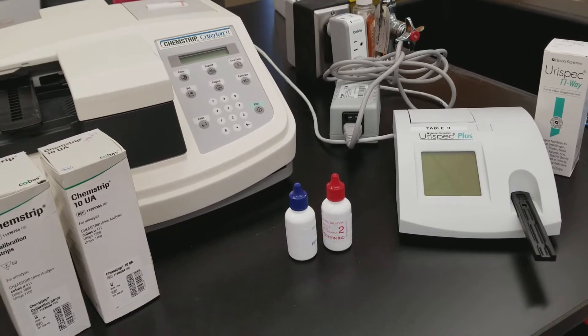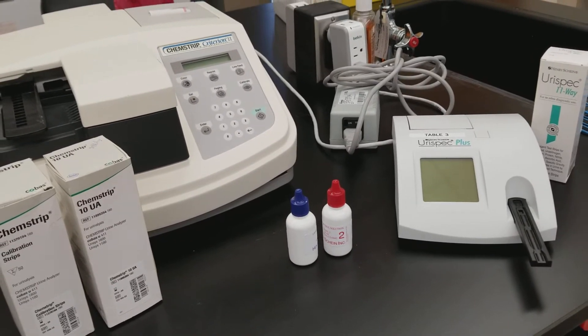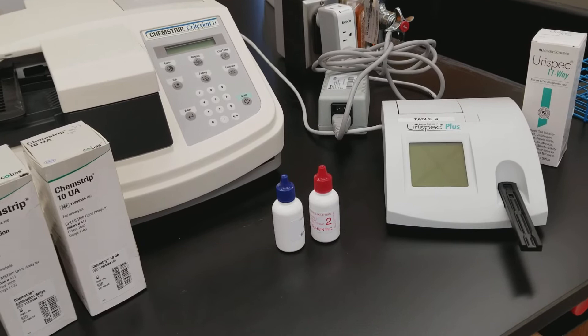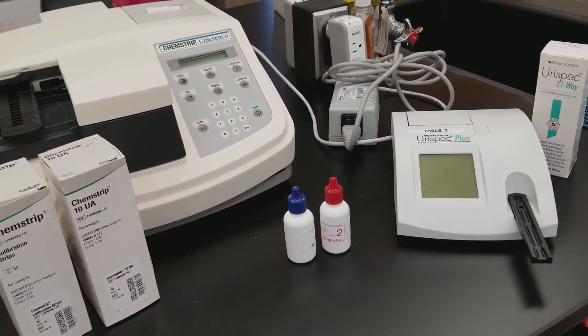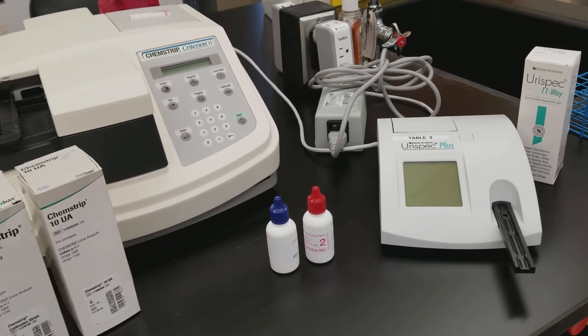Both of them are semi-automated analyzers that only measure the chemical component of the patient's urine and not the cellular portion, so you would need to do a manual microscopic every time in order to get a full UA on these.